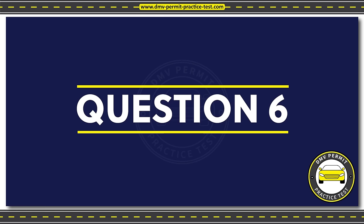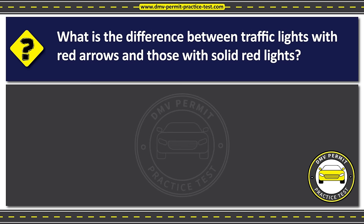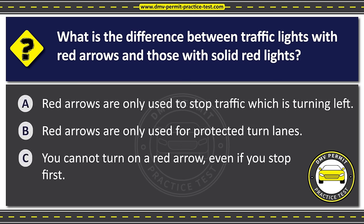Question six. What is the difference between traffic lights with red arrows and those with solid red lights? Option A: Red arrows are only used to stop traffic which is turning left. Option B: Red arrows are only used for protected turn lanes. Option C: You cannot turn on a red arrow, even if you stop first. The correct answer is Option C: You cannot turn on a red arrow, even if you stop first.